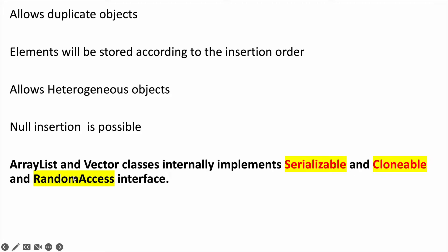ArrayList and Vector classes implement the RandomAccess interface as well. So, ArrayList and Vector classes are implemented based on the data structure called GrowableArray. So, the underlying data structure for both ArrayList and Vector class is GrowableArray. These are all the similarities between ArrayList and Vector class.